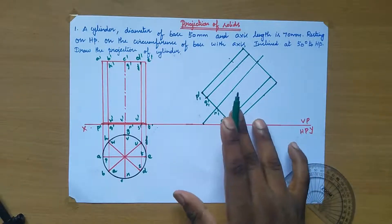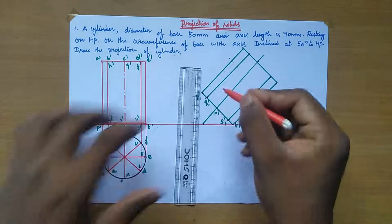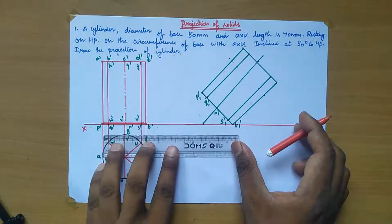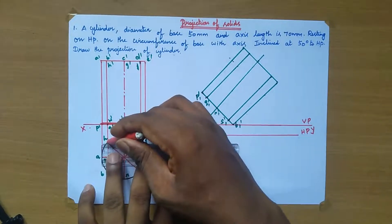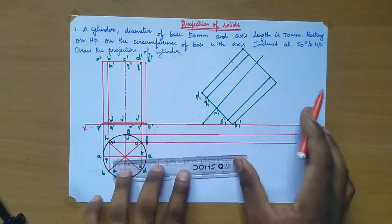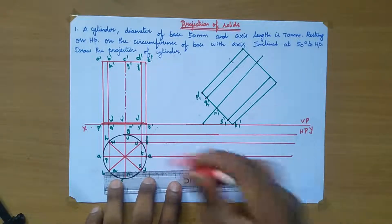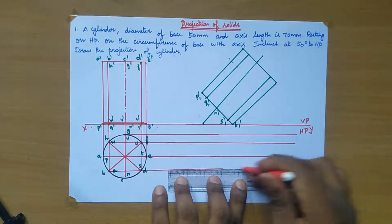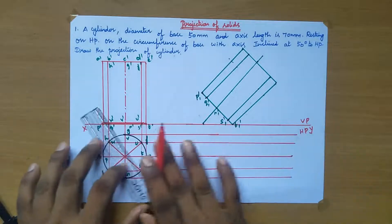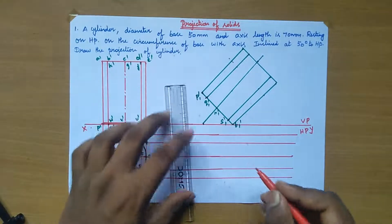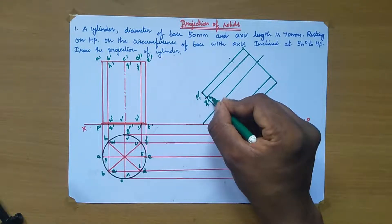In this front view section, the axis is inclined at 50 degrees. Now develop the segmentation line and draw the projector extend lines. Extend the projectors in the top view section. Extend the projectors from each point. Before extending, name this point P dash, Q dash, R dash, S dash, U dash, V dash, W dash, and name A dash, B dash, C dash, D dash, E dash, F dash, G dash, H dash.